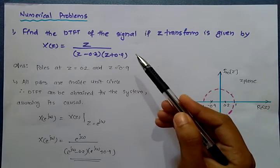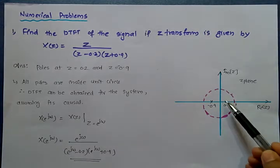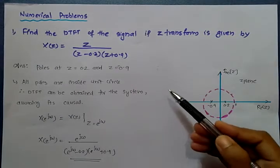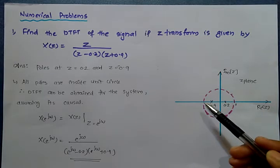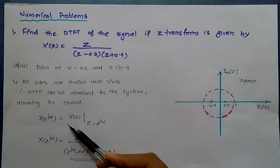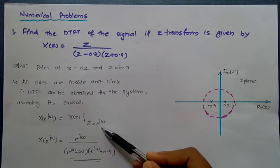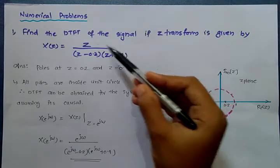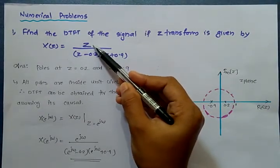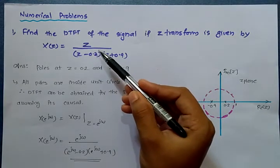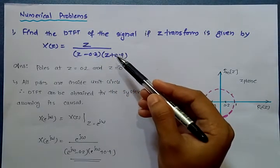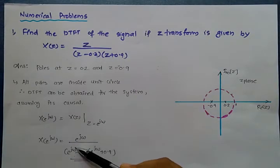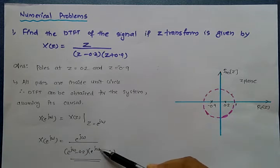Since both poles are inside the unit circle, the DTFT exists. DTFT is a special case of Z-transform when |Z| = 1. Therefore, substituting Z = e^{j omega}, we get: X(e^{j omega}) = e^{j omega} divided by (e^{j omega} minus 0.2)(e^{j omega} plus 0.9).